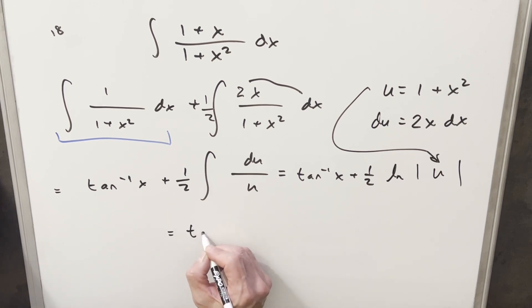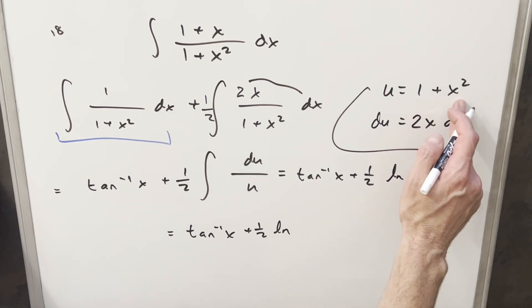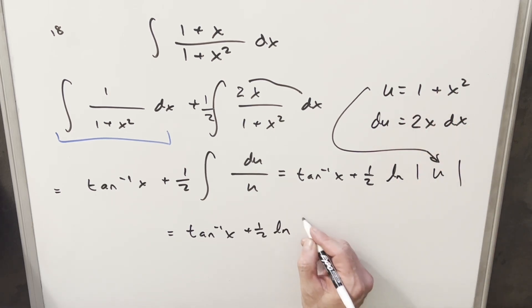So for our final solution, we're going to have just arctan of x plus 1 half natural log. Now 1 plus x squared, this is always positive because of the square term. So I can drop the absolute value here. We'll just do it with parentheses. 1 plus x squared plus c.